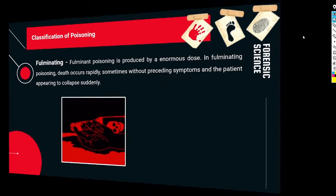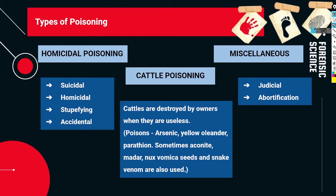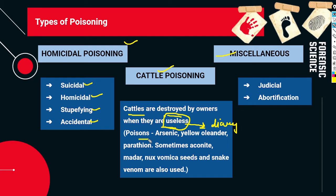Now let's look at the types of poisoning: homicidal, suicidal, accidental, stupefying, cattle poisoning, and miscellaneous. In cattle poisoning, cattle are destroyed by owners when they are no longer useful — unable to provide daily products. The owner gives them poison and they die. Poisons used for cattle include arsenic, yellow oleander, parathion, aconitine, nux vomica seeds, and snake venom.